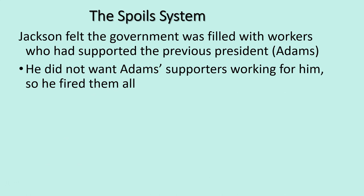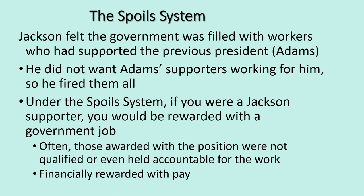The spoils system: when Jackson takes office, he feels the government is filled with workers who had supported John Quincy Adams, whom he doesn't trust. So he ends up firing basically all of them. He puts in place what historians call the spoils system — if you were a Jackson political supporter, you were rewarded with a government job. Often those awarded positions weren't exactly qualified for the job or held accountable for the work. Basically, it was a way to reward them with a government paycheck for their political support.